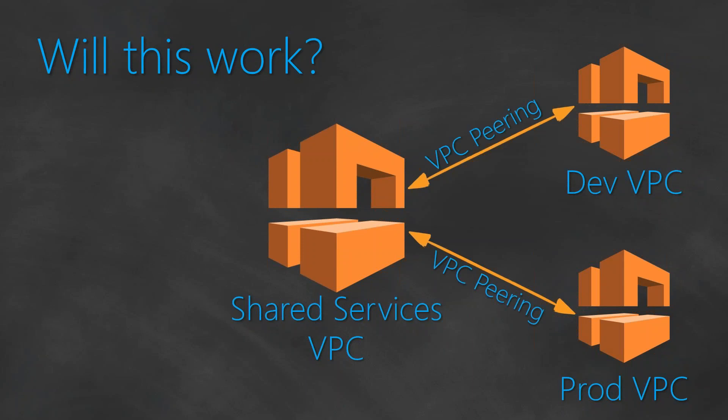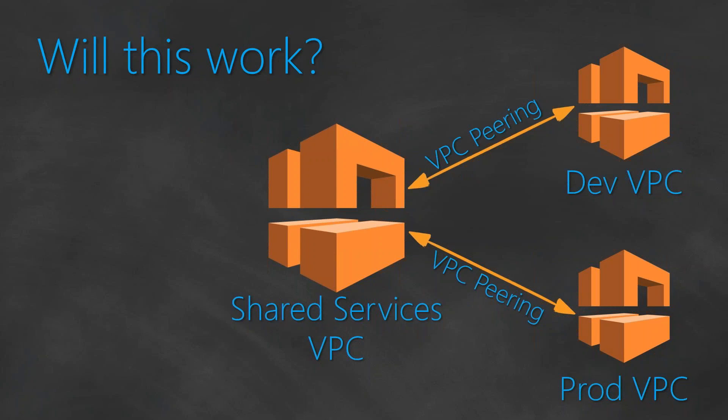All the jump boxes and VSTS clients were hosted on the shared services VPC, and they were deploying agents into the prod VPC and doing activities. There was also a requirement to get them connected to the internet — that is, any instance sitting in my production VPC needs access to the internet, and likewise any instance sitting in my dev VPC needs access to the internet.